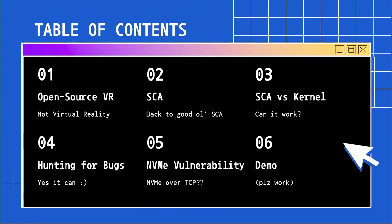So what will we have on our menu today? We'll first start by reviewing open-source vulnerability research methodologies, followed by how we can integrate static code analysis within it. Afterwards, we'll see how I used static code analysis against the kernel itself and see some vulnerabilities I found, and lastly deep dive into the main vulnerability in the NVMe driver of the Linux kernel — and hopefully the demo will work.